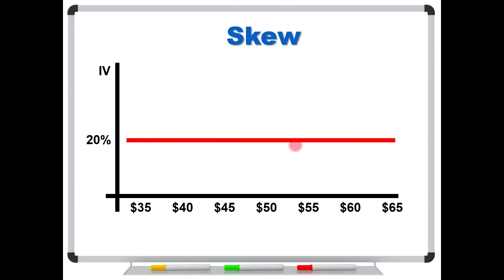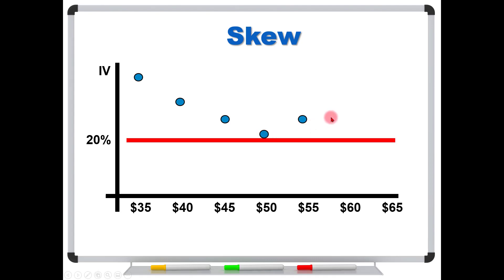Even though that's what you'd expect, what you're probably going to see is that the in-the-money options might trade at much higher implied volatilities. As we get closer to at-the-money, they'll start to drop — the 45 call might be trading less, and the 50 call, being at-the-money, will usually trade very close to the actual volatility of the stock. There's an arbitrage opportunity if this doesn't occur. But if we start going out of the money, you'll see implied volatilities start to get bumped up again.